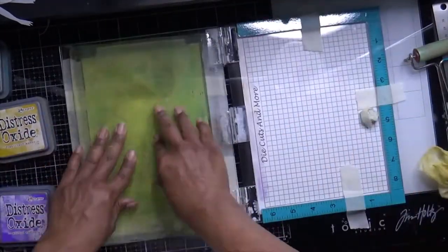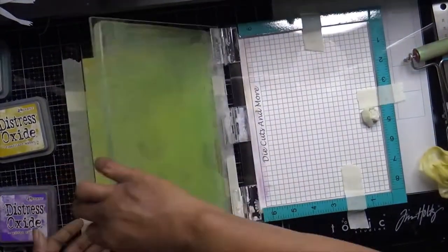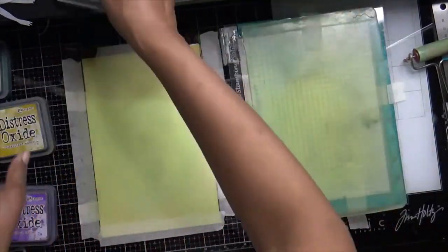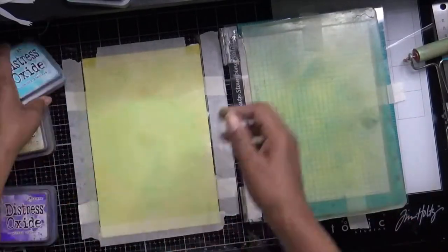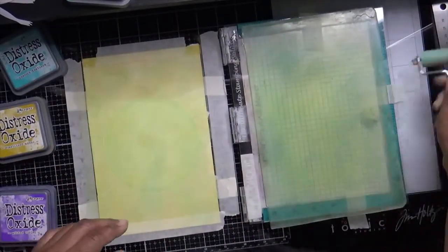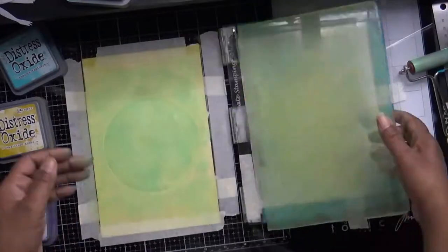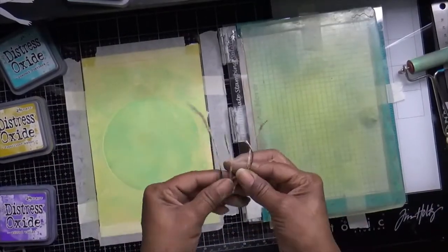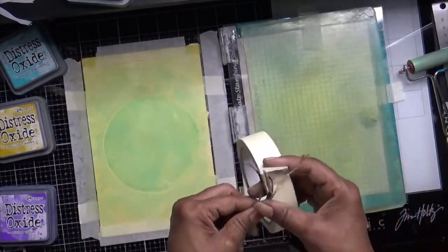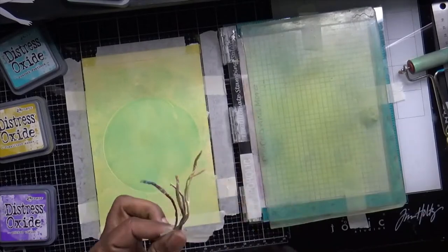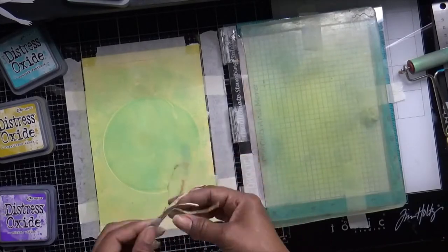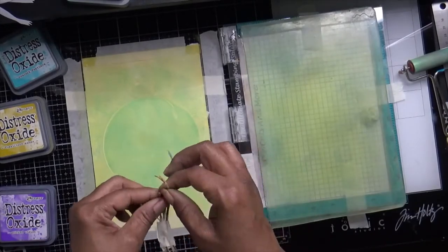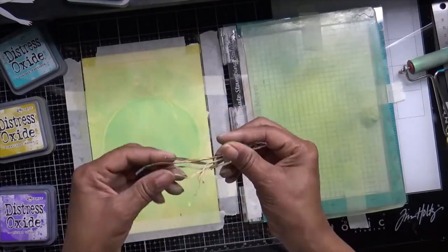I believe this is pistachio. I'm stamping that down and then I'm coming back with a little bit of peacock feather and stamping that over that circle again. Now I've got this bright idea that I want to create the illusion of seaweed at the bottom of this scene.